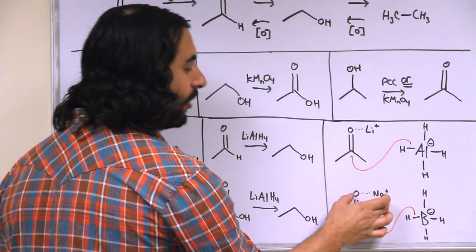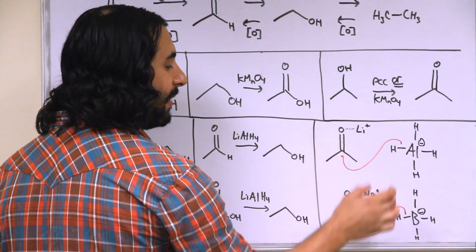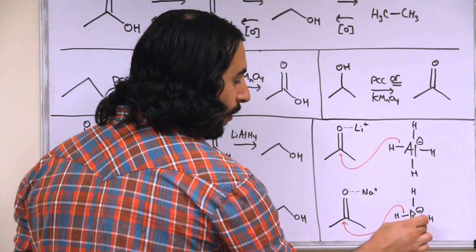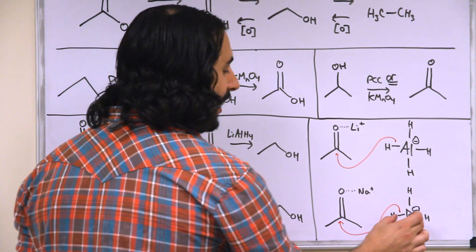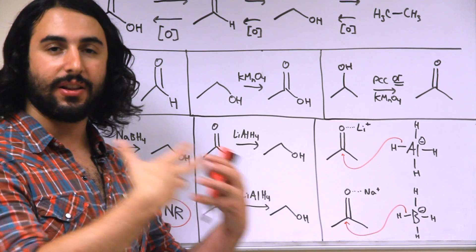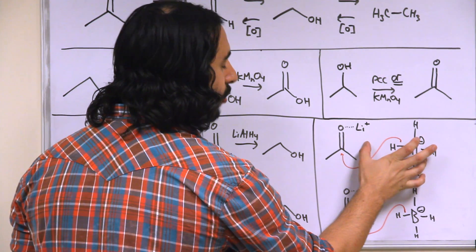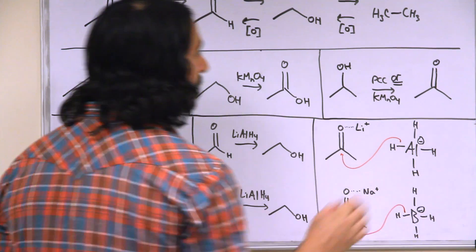So sodium, a bit larger, isn't able to interact quite as well with the carbonyl as lithium is. Secondly, boron being slightly more electronegative is holding onto those hydrides just a little bit tighter. So those are two things that act in unison to make lithium aluminum hydride a stronger reducing agent than sodium borohydride.